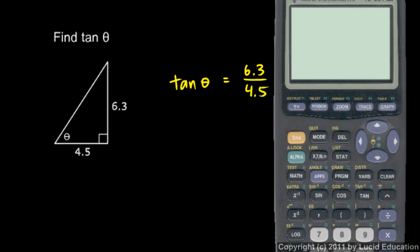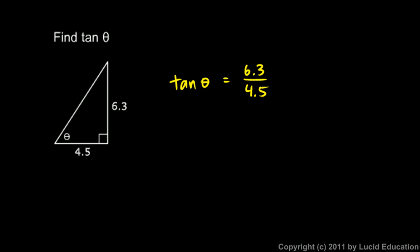And you can work that out, or you can pull out the calculator and just do, let's see, 6.3 divided by 4.5. That comes out to 1.4. So the tangent of theta in this case is 1.4. Pretty easy.